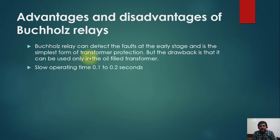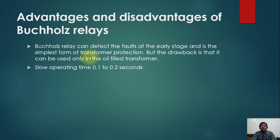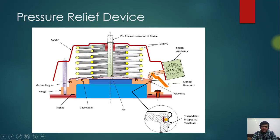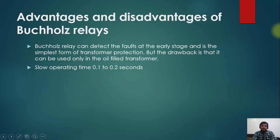Regarding the advantages and disadvantages of the Buchholz relay: the Buchholz relay can detect faults at an early stage and is the simplest form of transformer protection. However, the drawback is that it can only be used on oil-filled transformers. Another drawback is the slow operating time of 0.1 to 0.2 seconds. Thank you very much.